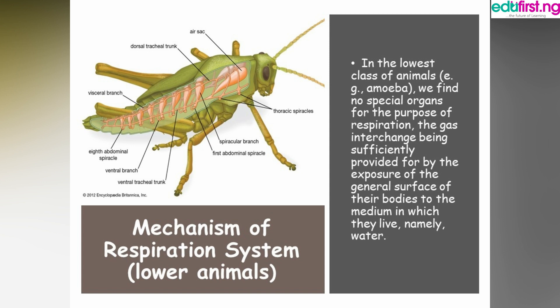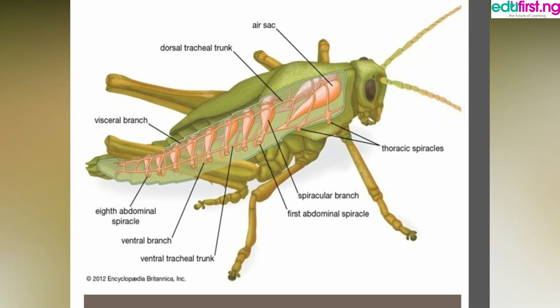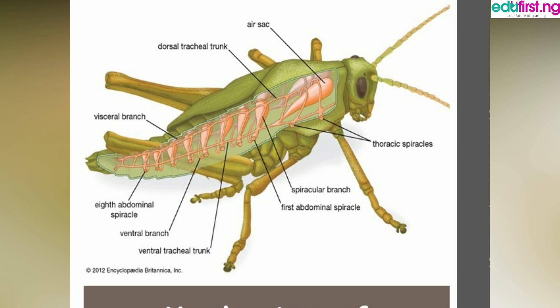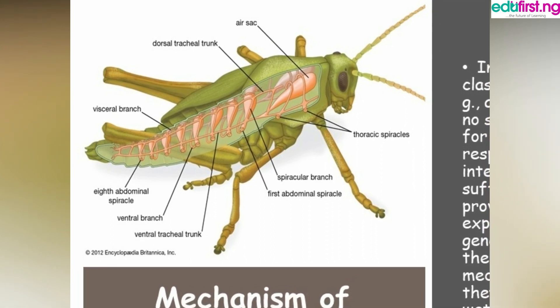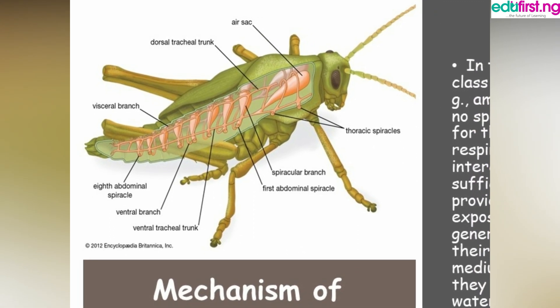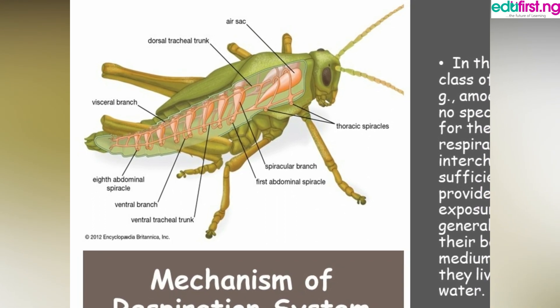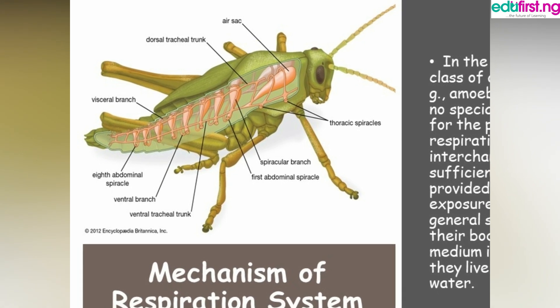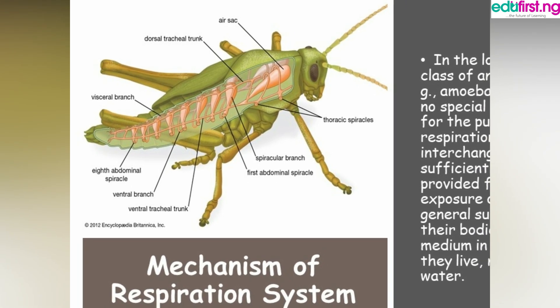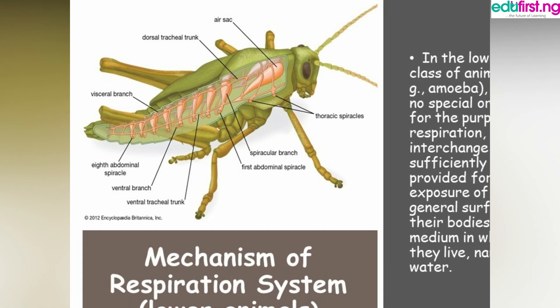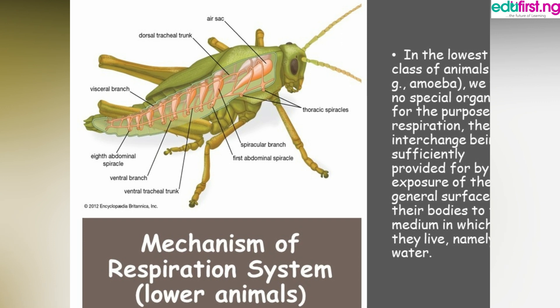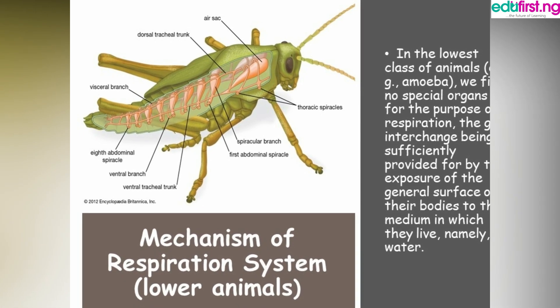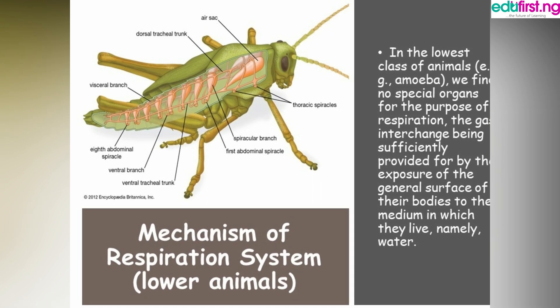The mechanism of the respiratory system in lower animals: examples include insects, amoeba, paramecia, and spiders. In lower-class animals, there are no special organs for respiration. Gaseous interchange is sufficiently provided by exposing their body surface — the more they expose their body, the higher the respiratory movement. Gas moves from a lower concentration to a higher concentration.